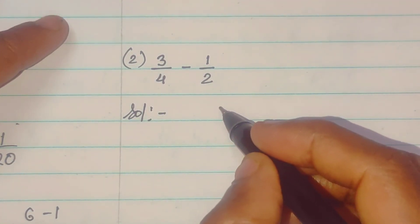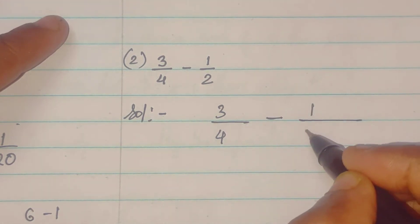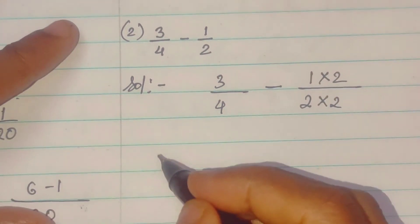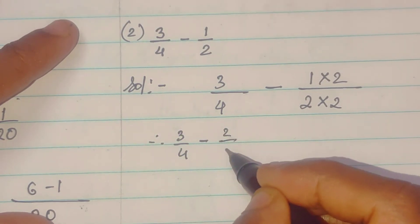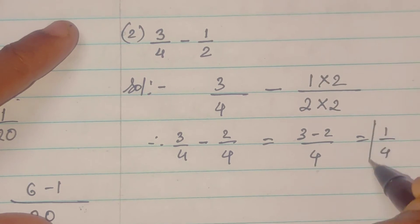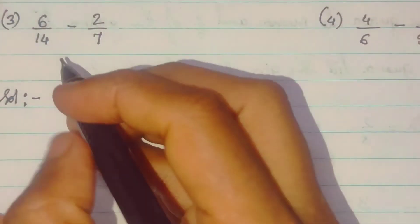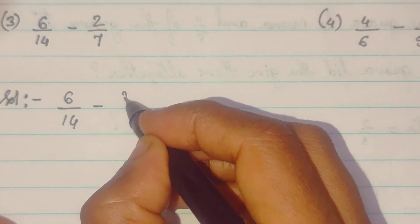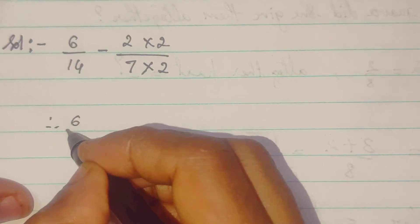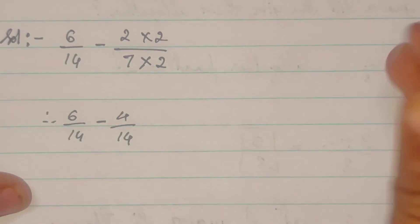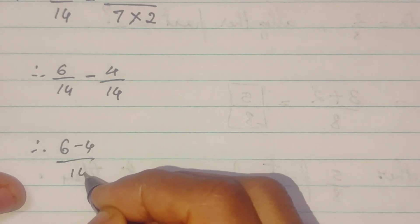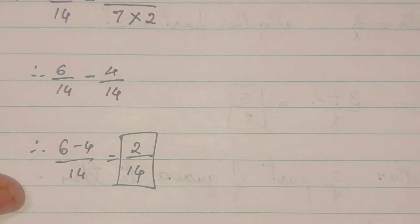Now, second sums, 3 upon 4 minus 1 upon 2. So, this 2 we can make it as a 4. 2 ko 4 banna sakte 2 se mantiklai karke to 3 upon 4 minus 2 upon 4. So, that will be 3 minus 2 upon 4. That will be 1 upon 4. So, now 6 upon 14 minus 2 upon 7. So, 7 kam 14 banna sakte multiply by 2. So, therefore, 6 upon 14 minus 4 upon 14. So, yeh finally banna jaye ga 6 minus 4 upon 14. That is 2 upon 14. So, this is the answer.